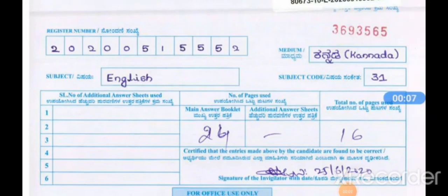Hi everyone, welcome back to Rakesh's YouTube channel. Today I want to share with you one answer sheet who scored 80 out of 80 in Second Language English subject. Students, write your registration number first, then medium, then subject code, then subject — write like this.